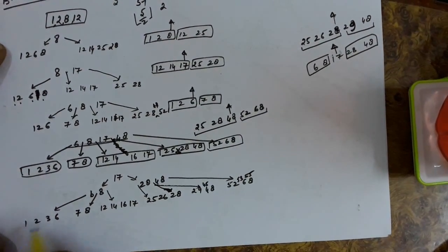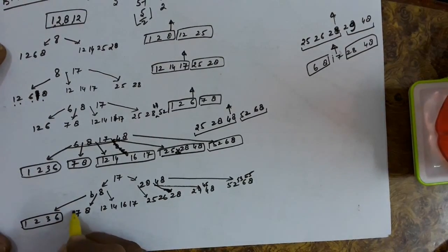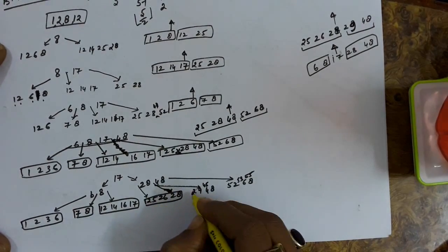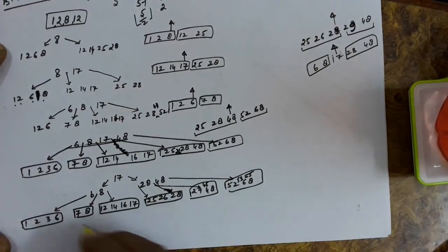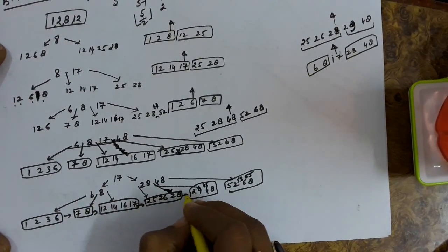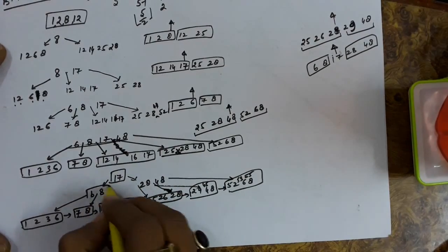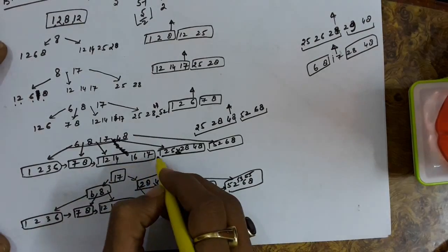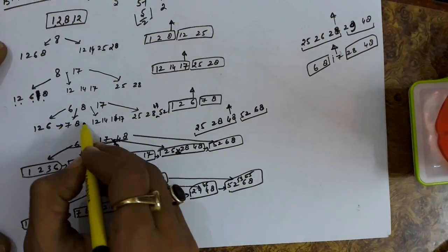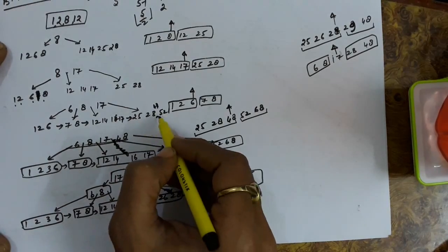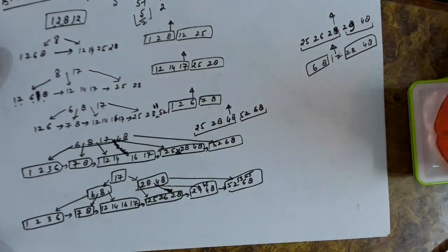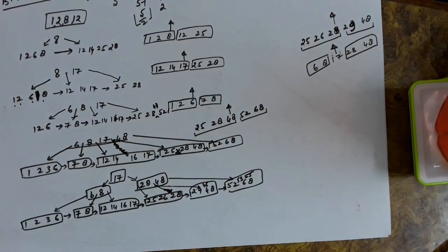This is the final B+ tree. What we need to do is link up all the leaf nodes. During the process of insertion also, we need to link up the leaf nodes every time we are inserting. This is the insertion process in the B+ tree. Thank you.